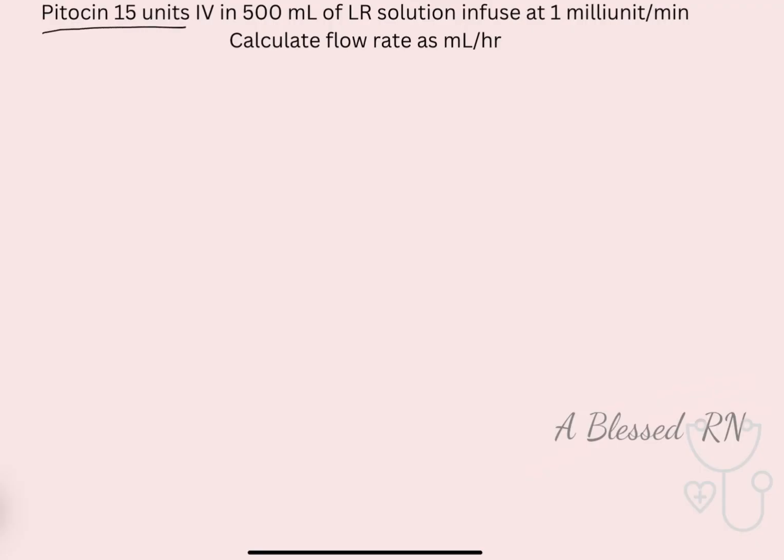IV Pitocin, 15 units in 500 mL of lactated ringer to infuse at 1 milliunit per minute. Calculate the flow rate as mL per hour.